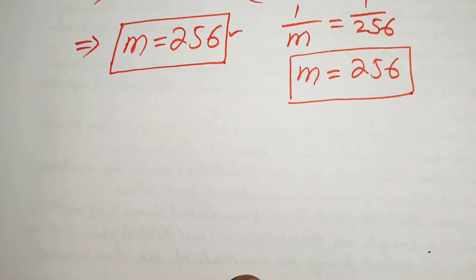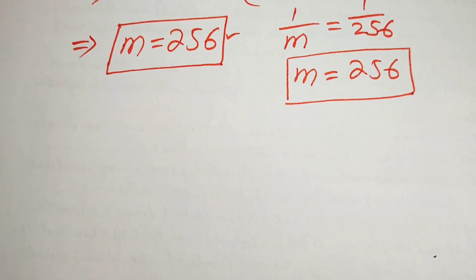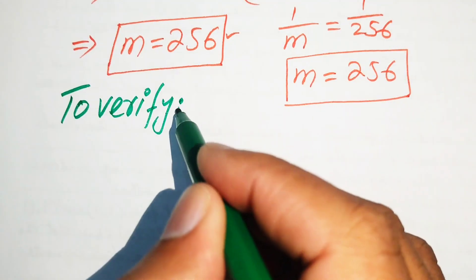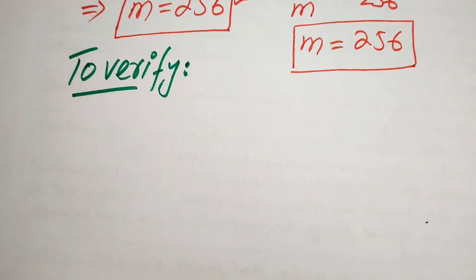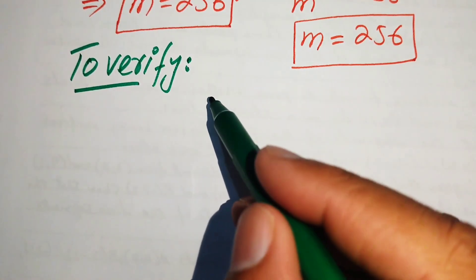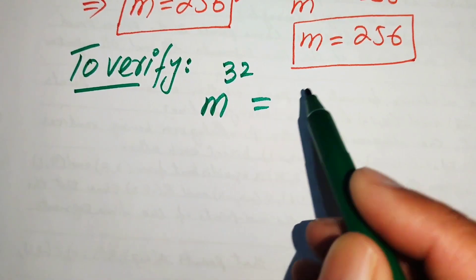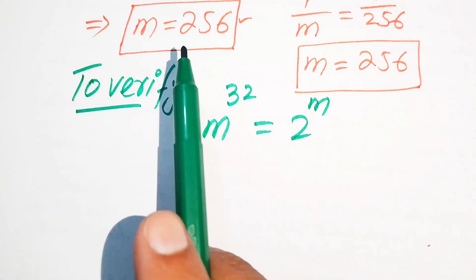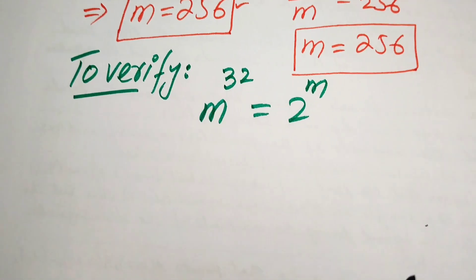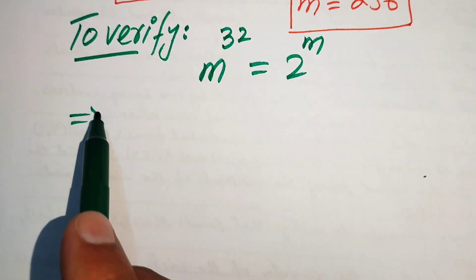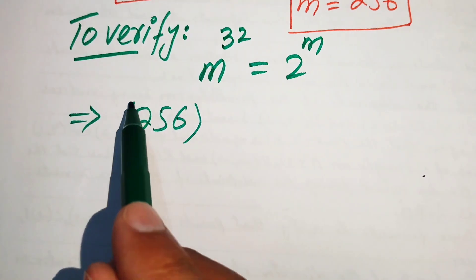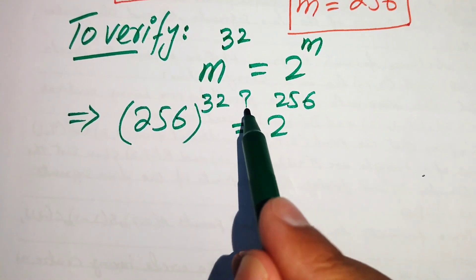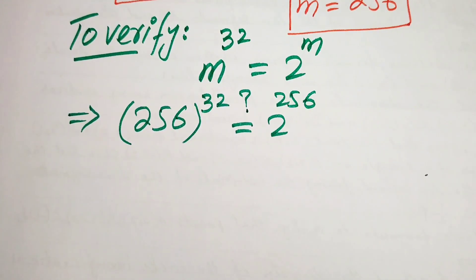This is our final answer: m equals 256. Now we verify whether this value satisfies the original equation. We copy down the given statement: m to the power of 32 equals 2 to the power of m. We substitute m equals 256 on both sides: the left hand side becomes 256 to the power of 32, and the right hand side is 2 to the power of 256. We check whether both sides give the same answer.